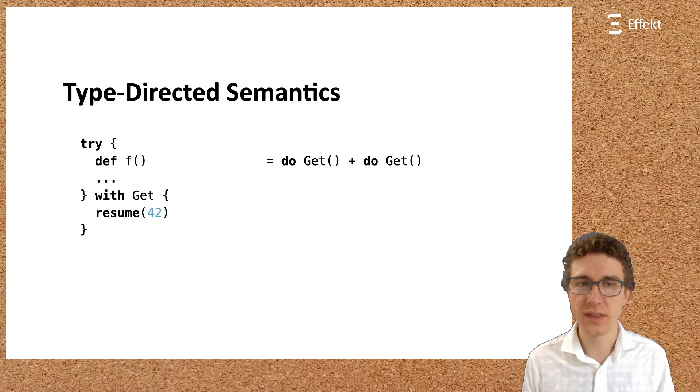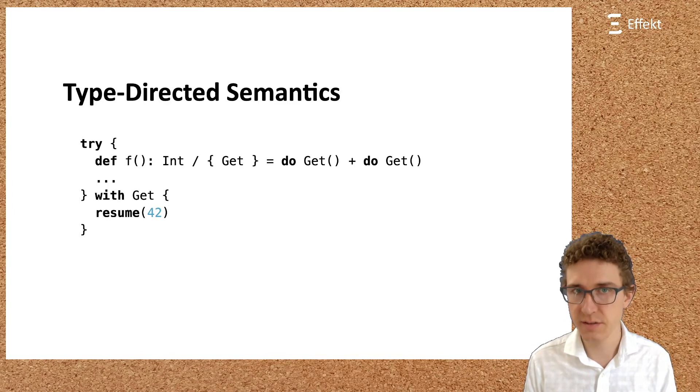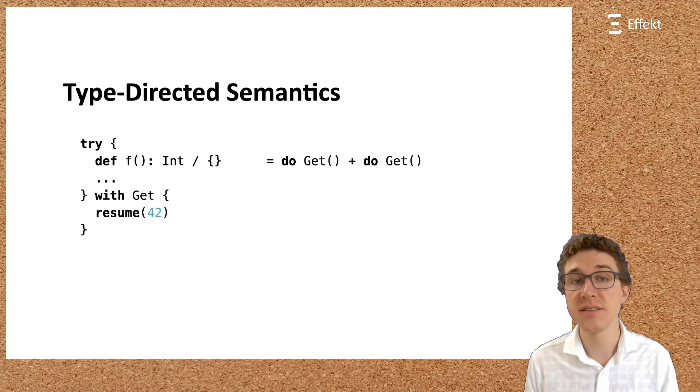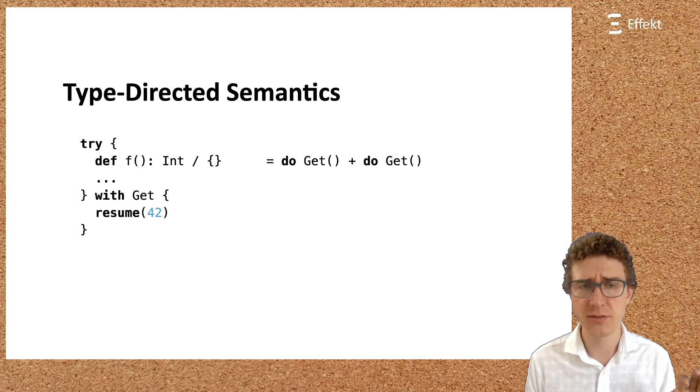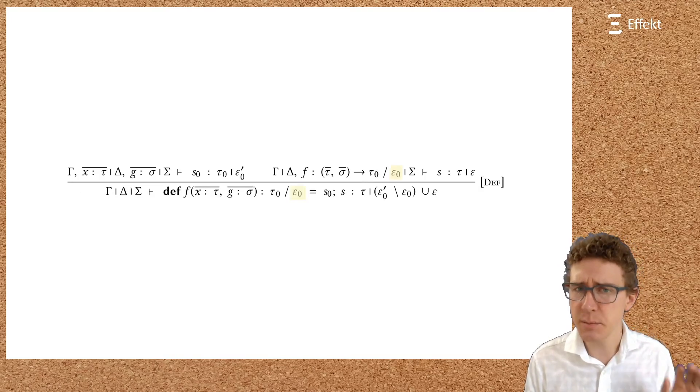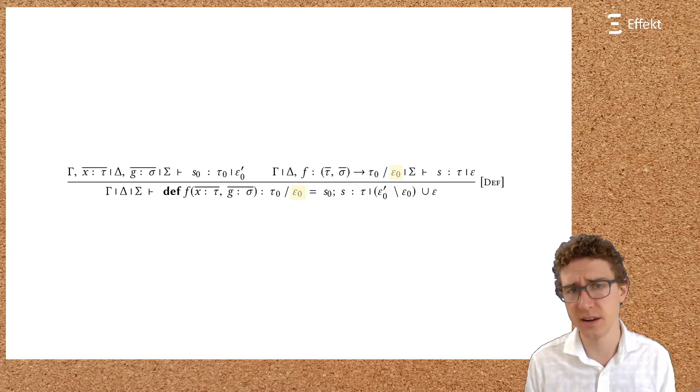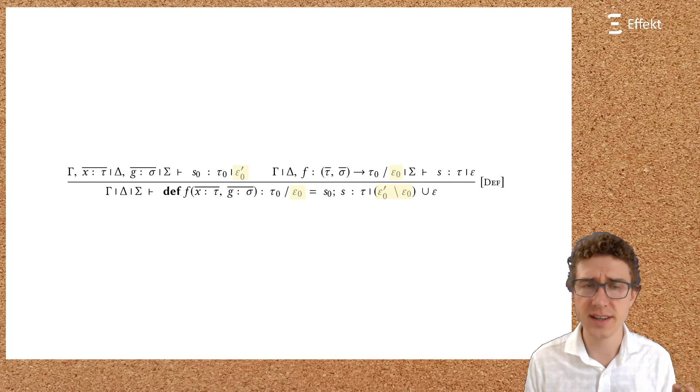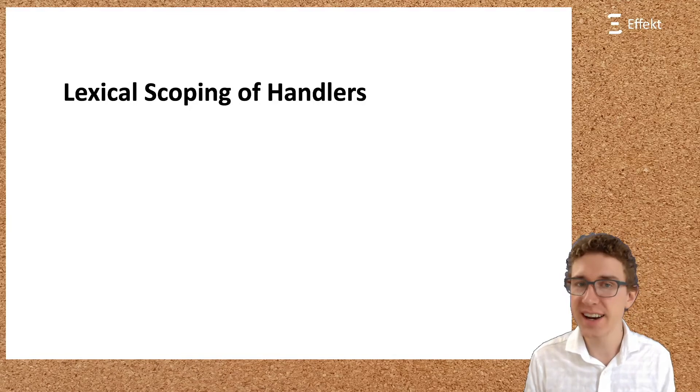By annotating the effect on a block, the user can choose whether an effect should be handled at the call side of the block, or whether it should be handled at the definition side of the block. The different annotations not only affect typing, but also operational semantics, as we will see. But first, let us review our typing judgment for blocks. We can see exactly this. Some effects, epsilon zero, are annotated on the function f and need to be handled at the call side of f. All other effects, epsilon zero prime, without epsilon zero, have to be handled at the definition side.